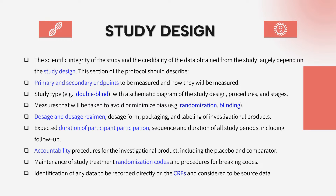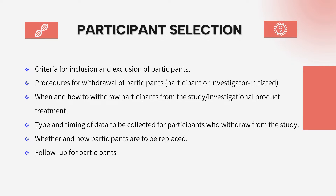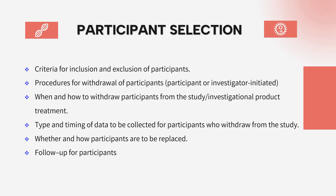The next section is participant selection. If a protocol is designed to target a particular drug for a particular patient population, it needs to clearly define which participants would be eligible for the trial. It will have sections for inclusion and exclusion criteria, followed by withdrawal procedures for participants who want to withdraw after randomization — when and how to withdraw the subject, which investigational product shall be stopped or continued, post-study access, and the type and timing of data to be collected from subjects.